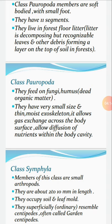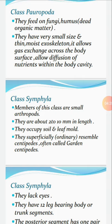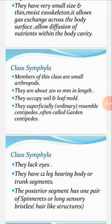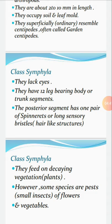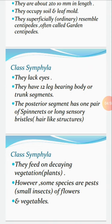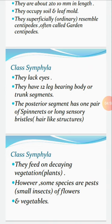Class Symphyla: Members of this class are small arthropods that occupy soil and leaf mold. They superficially resemble centipedes and are often called garden centipedes. Features include lack of eyes and 12 leg-bearing body trunk segments. The posterior segment has one pair of long sensory bristles, which are hair-like structures. Class Symphyla feed on decaying vegetation; however, some species are pests of flowers and vegetables.